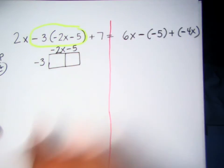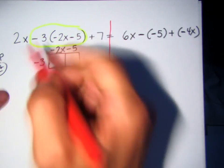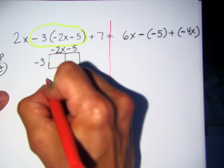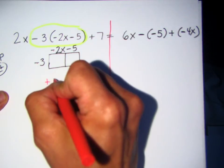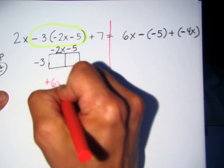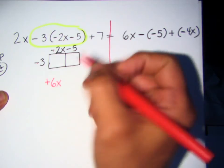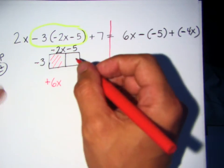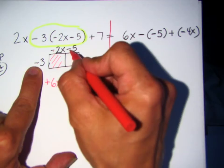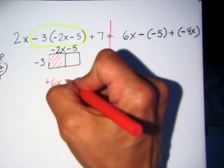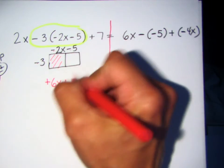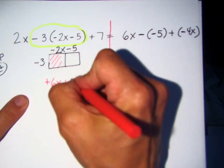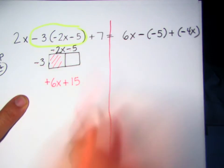So now what do we do? We multiply. Negative times the negative — positive what? Right, 6x. So now I'm done with this here. Negative times the negative — cover the negative — positive. And 3 times 5? 15. Very good.